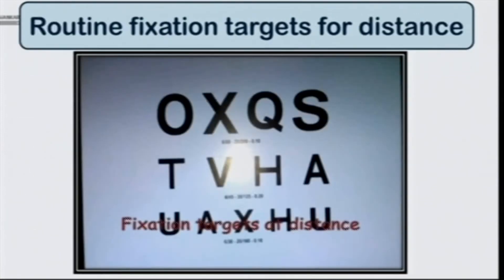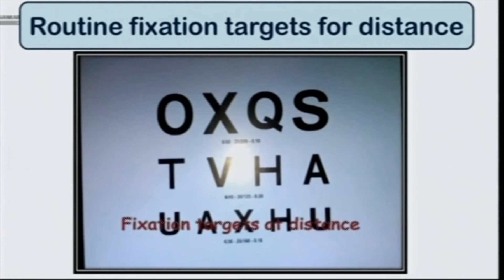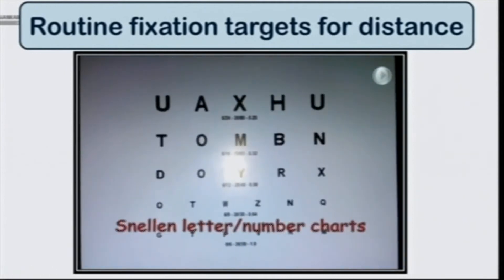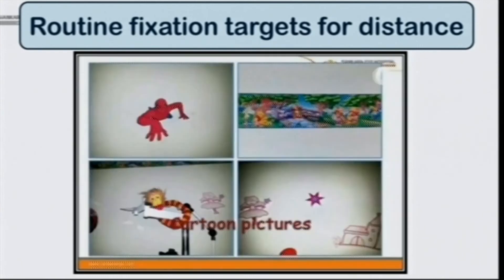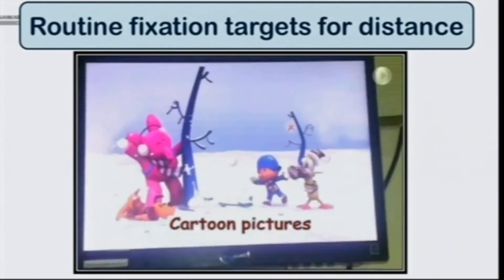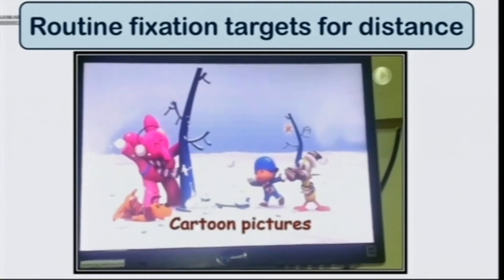When we talk of fixation targets, do we need anything extra, or do we have something in our ophthalmic OPD already? All of us have Snellen visual acuity charts which are a part of every ophthalmic OPD. These fixation targets — either Snellen letter charts, Snellen number charts, or E charts — can be used as fixation. In a younger child, we have cartoon pictures which are a part of Snellen charts that could be used as a fixation target.